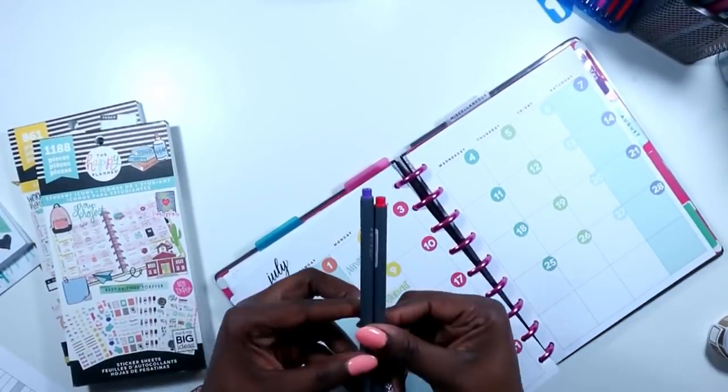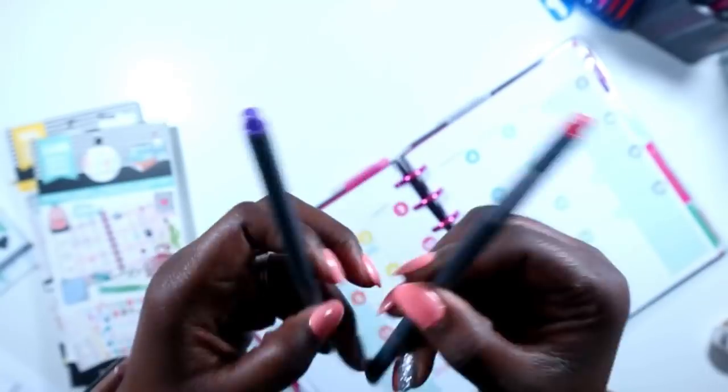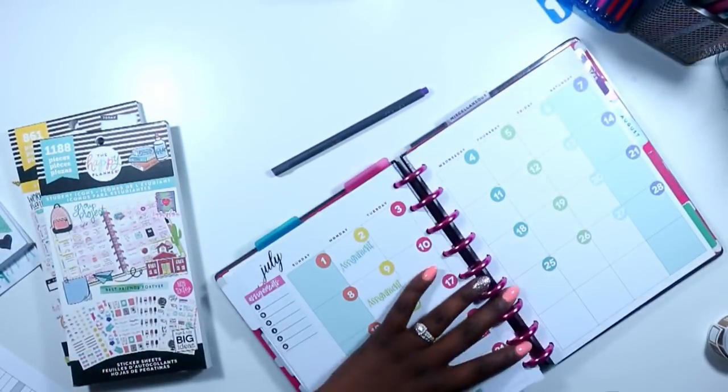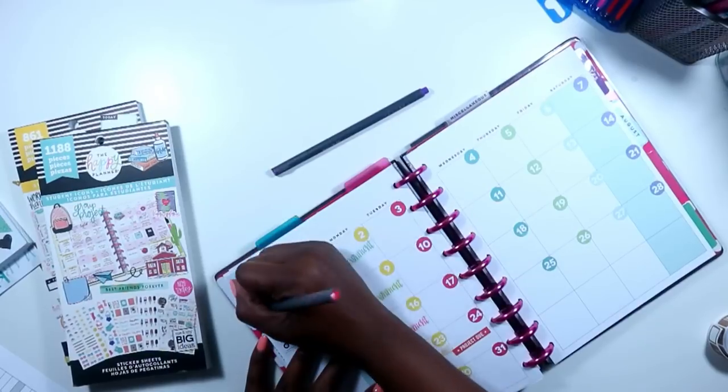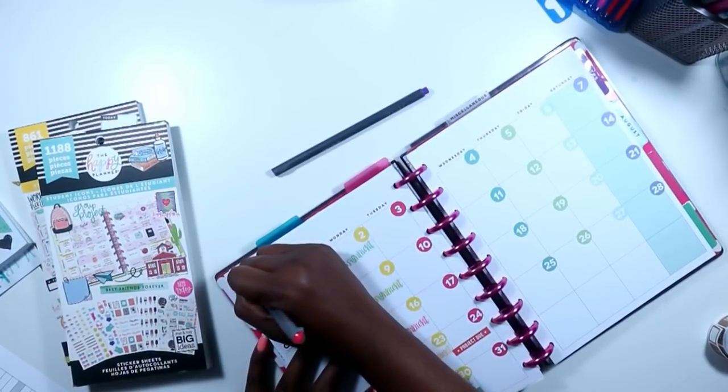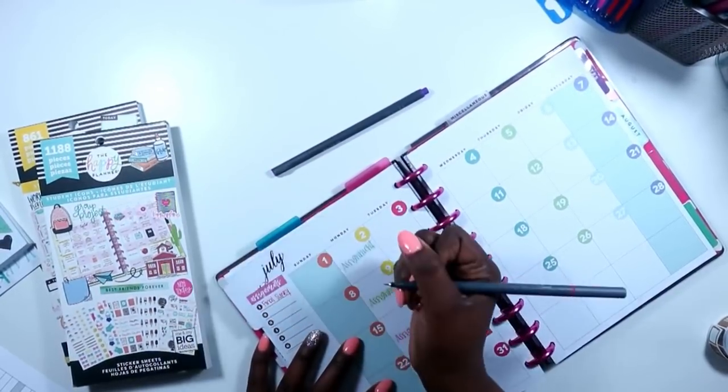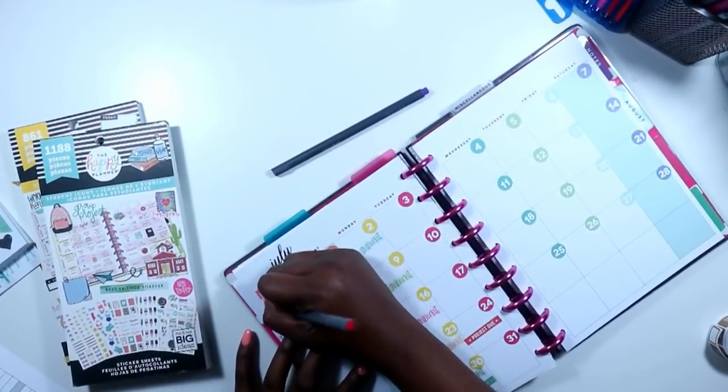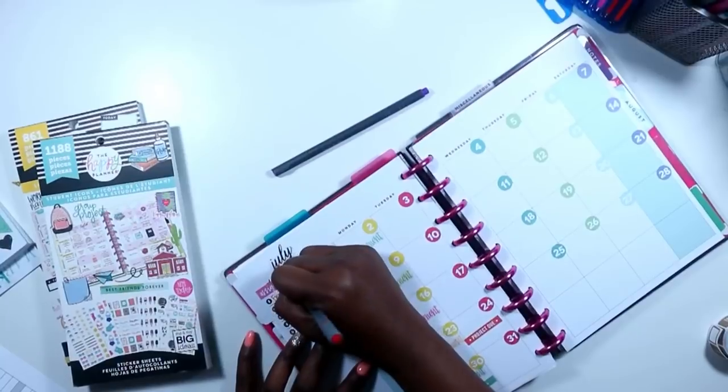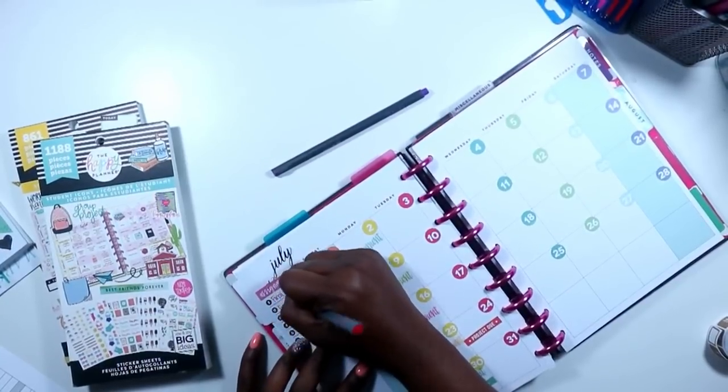Alright guys, so now I am pulling out the two colors that I'm using and I am in love with this coral glitter pen. If you guys have not picked these up yet, I will leave another link down below. I picked them up from Amazon and I'm also going to use my favorite color which is purple. Because July is my birthday month, so you're going to be seeing lots of purple this month.